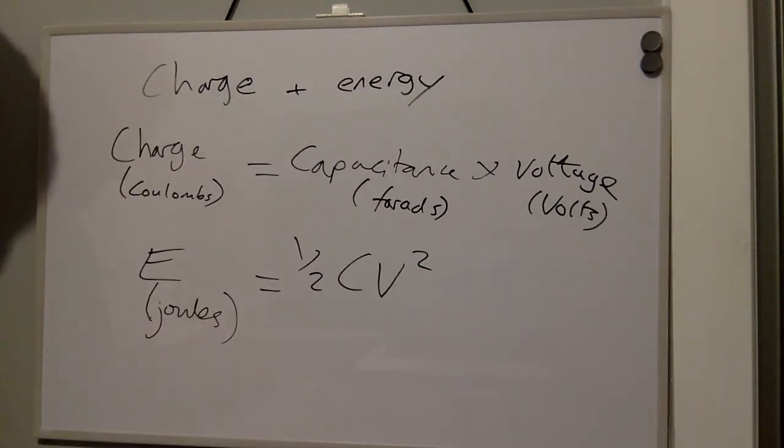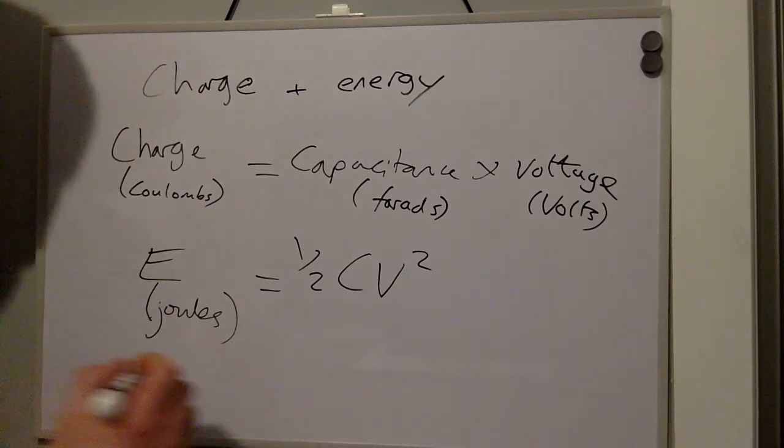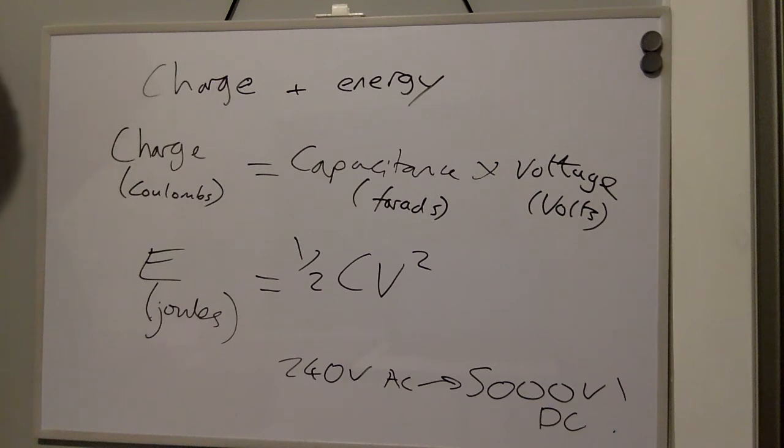Defibrillators use a step up transformer to convert mains 240 volts AC into 5000 volts DC.